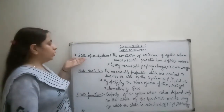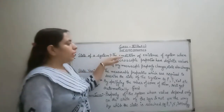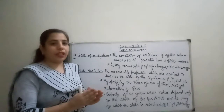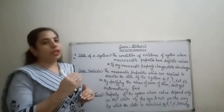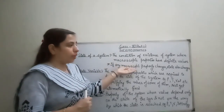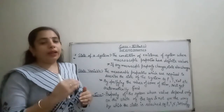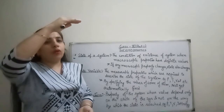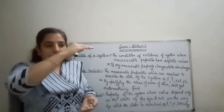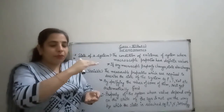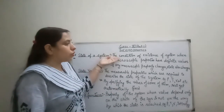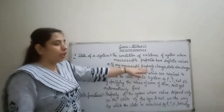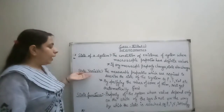Next is the state of a system — the condition of existence of the system when macroscopic properties have definite values. For example, if a system's temperature is high and pressure is low, it is in a gaseous state. If we lower the temperature and increase the pressure, it becomes liquid, and further lowering temperature and increasing pressure gives the solid state. So when macroscopic properties change, the state of the system also changes.